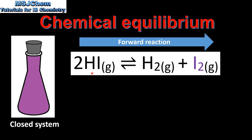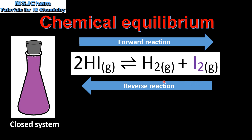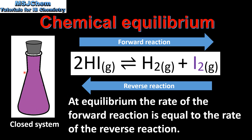However, what's actually occurring in the flask is that as hydrogen iodide is decomposing to form hydrogen and iodine, the reverse reaction is also taking place — iodine and hydrogen are reacting together to form hydrogen iodide. The system has reached a state of dynamic equilibrium: the rate of the forward reaction is equal to the rate of the reverse reaction, and both reactions are still occurring. One feature of a reaction at dynamic equilibrium is that there's no change in macroscopic properties such as color.